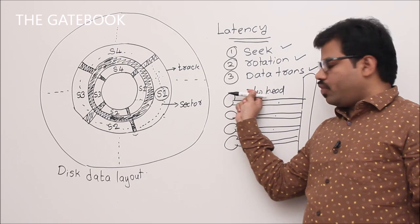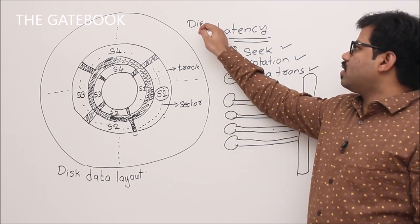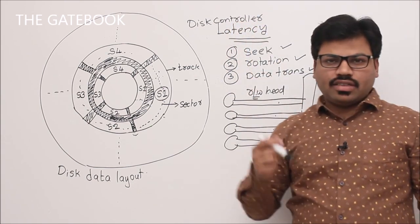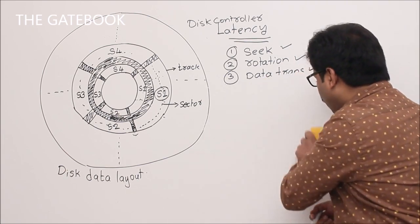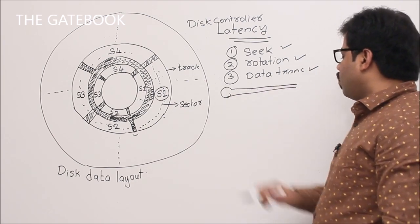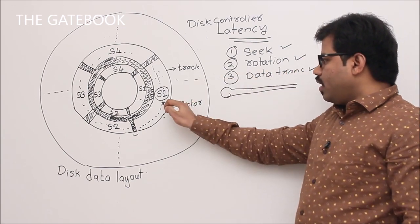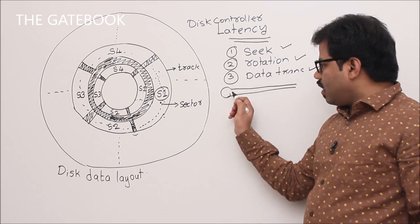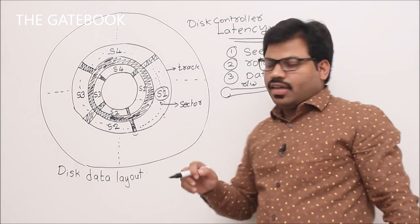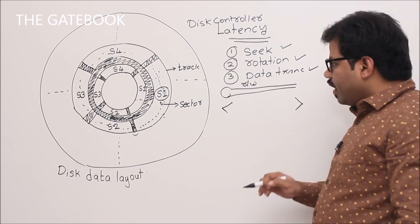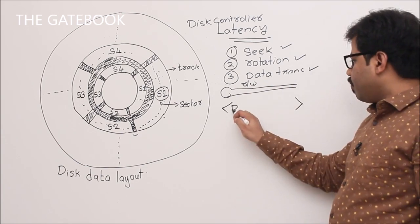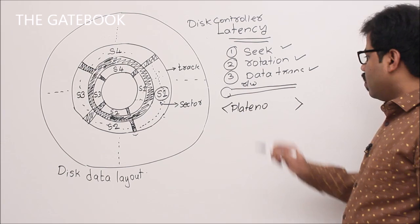Each read/write head is moved to a particular area. If you want to store data in a specific area, the read/write head for that plate must be moved. A disk controller — which has the electronics and circuitry — manages this. The head is moved to the appropriate track.